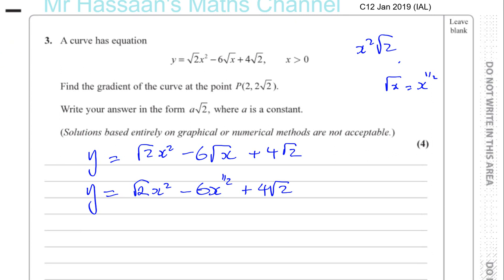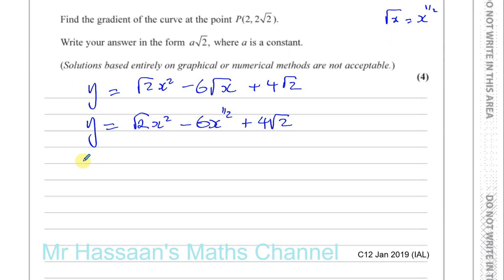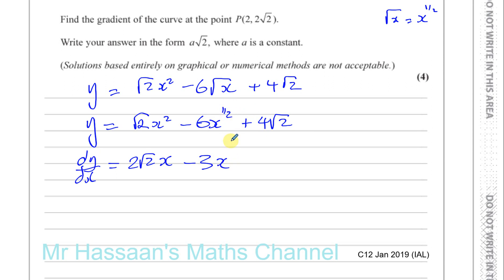We've now prepared it for differentiating. Now we can differentiate, and this is when you write dy/dx. Don't write dy/dx before you've actually started differentiating. For root 2 times x squared: multiply by the power to get 2 root 2, and take 1 from the power to get x to the power of 1. Then a half times minus 6 gives minus 3, and x to the power of a half minus 1 gives x to the negative a half. The constant 4 root 2 differentiates to 0.